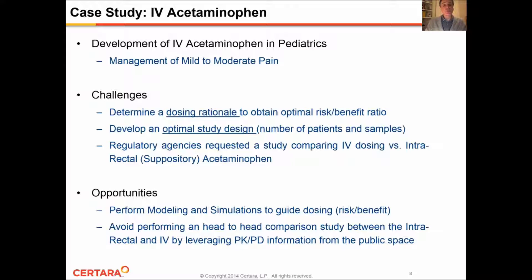I will wrap up this presentation with a case study on the use of intravenous acetaminophen in pediatrics for the management of mild to moderate pain. The challenge here was to determine a dosing rationale that would optimize the risk-benefit ratio. The second challenge was to develop an optimal study design in terms of number of patients and samples, and ultimately answer important regulatory questions about how the intravenous dose would perform relative to the intrarectal suppository formulation. The opportunity here is to apply modeling and simulations to guide dosing, and perform simulations to avoid a trial comparing intravenous versus intrarectal administration, and convince regulatory bodies that such a study would not be necessary.